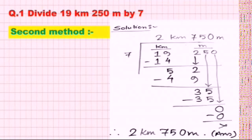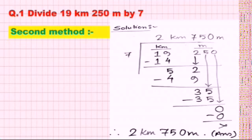Now I am discussing question number 1: divide 19 km 250 meter by 7, using the second method. In the second method, first we need to make two columns. If the question involves three different units, we make three columns. Here kilometer and meter are involved, so the first column will be km and the second column will be meter. First we need to divide by 7.